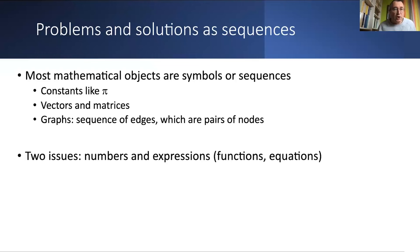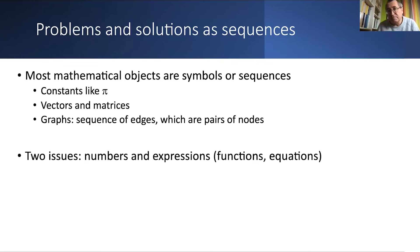How do you represent problems and solutions as sequences? Most mathematical objects are already symbolic or sequential. We use lots of letters and symbols like pi in math. Many objects like vectors and matrices are essentially sequences or sequences of sequences. You can think of a graph as a sequence of edges — pairs of nodes. There are only two real issues: how do you represent numbers, and how do you represent expressions like functions or equations?